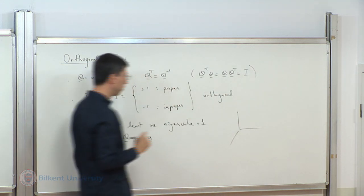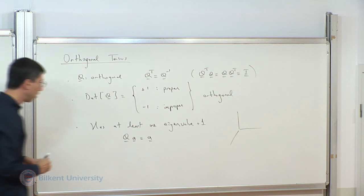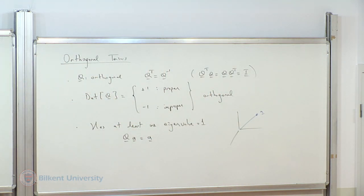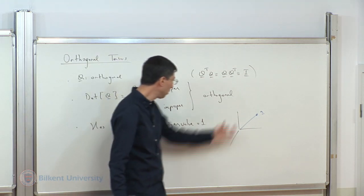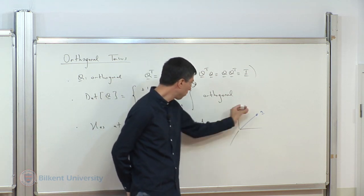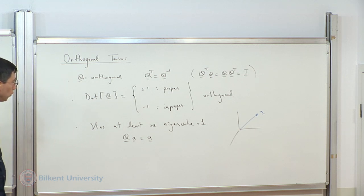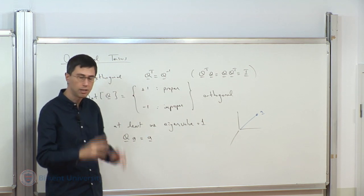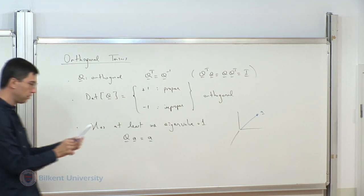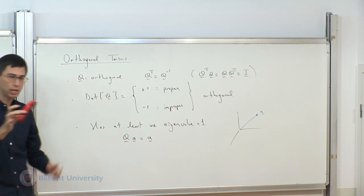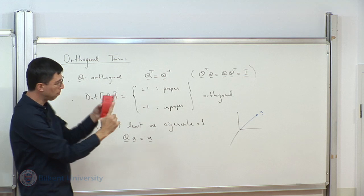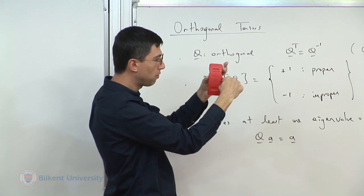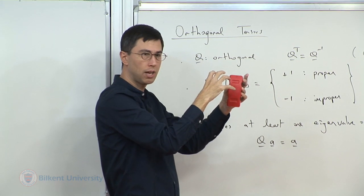Consider three axes indicating orthonormal basis vectors and a vector A drawn from the origin. For any rotation, there is an axis of rotation: you can always find an axis such that the object has rotated about that axis. The vector corresponding to the unit eigenvalue turns out to be that axis of rotation. To find the axis, you just find the eigenvector corresponding to eigenvalue 1.